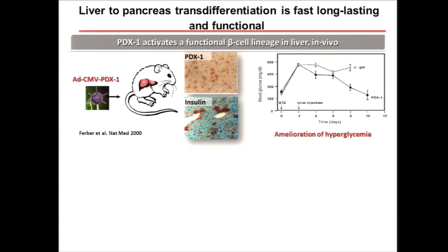Yes — we subcloned PDX1 into a recombinant adenovirus and delivered it into the bloodstream via the tail vein, which resulted in PDX1 expression in the nuclei of liver cells. To our surprise — and remember this was a Nature Medicine paper in 2000 — insulin production started in less than 1% of the liver cells.